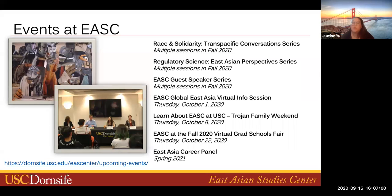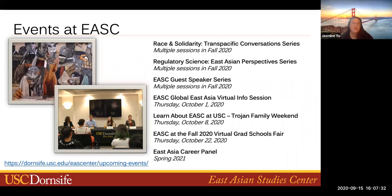Our first event will be on October 6th. We have a series called Race and Solidarity: Trans-Pacific Conversations. USC professor Duncan Williams has invited Professor Yuichiro Onishi from the University of Minnesota to delve into today's Afro-Asian alliance regarding the Black Lives Matter movement. Professor Onishi recently published an essay titled 'A Politics of Our Time: Reworking Afro-Asian Solidarity in the Wake of George Floyd's Killing.' We also have a series called Regulatory Science: East Asian Perspectives, covering health and wellness topics, with a first talk focused on drugs and COVID times with two USC faculty from the Health Sciences campus.